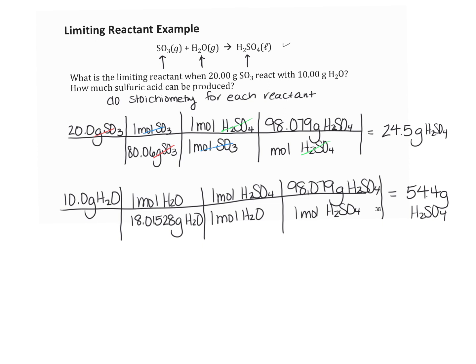The limiting reagent is the one that makes the least amount. SO3 produces only 24.5 grams of H2SO4, which is less than the 54.4 grams produced by H2O. So SO3 is the limiting reagent, and 24.5 grams of H2SO4 is the theoretical yield.